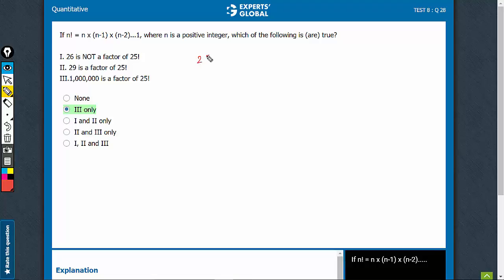25 factorial means 25 into 24 into 23 until 1. So of course, there would be a 13 somewhere, there would be a 2 somewhere. So 26 is going to be a factor of 25. So this statement is false.